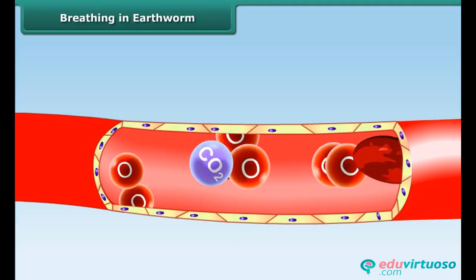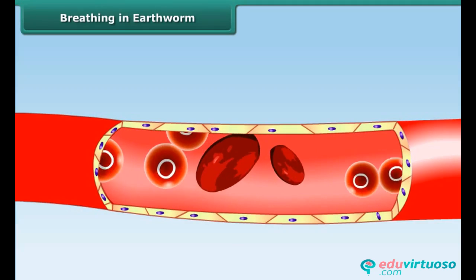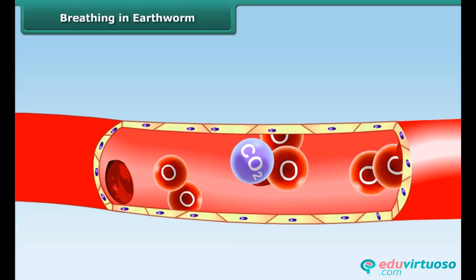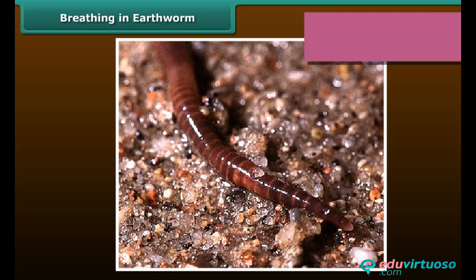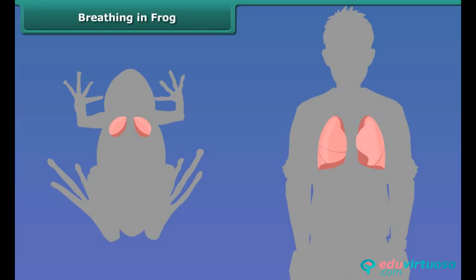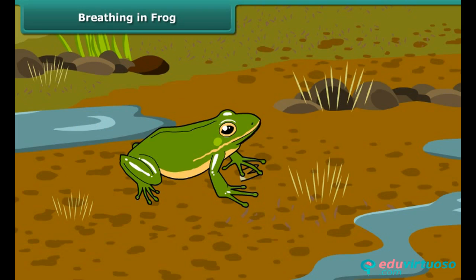The same blood vessels carry carbon dioxide to be expelled through the skin. For effective absorption of oxygen, earthworms keep their skin moist. Frogs, like human beings, have lungs and use them for breathing, but since their lungs are not well developed, they use two other types of respiration.